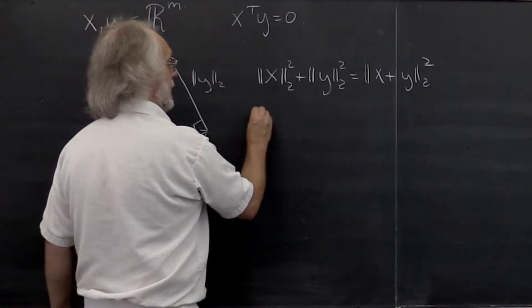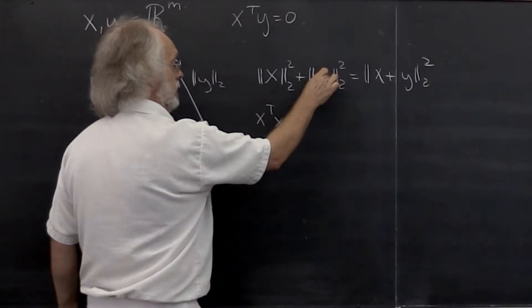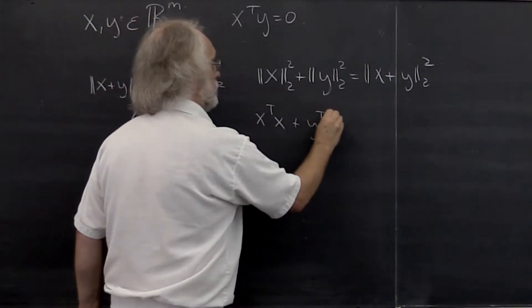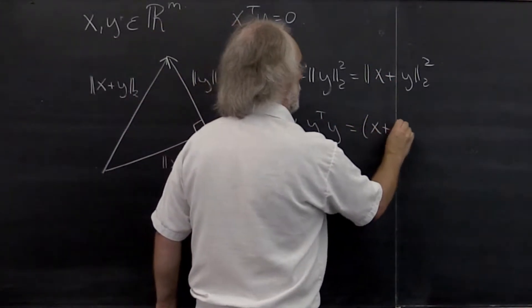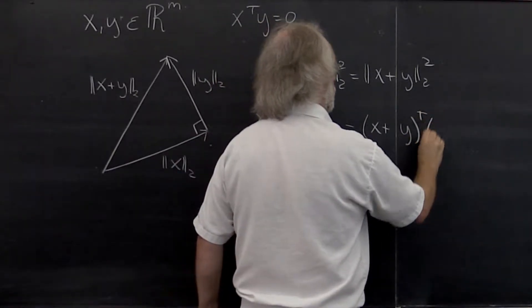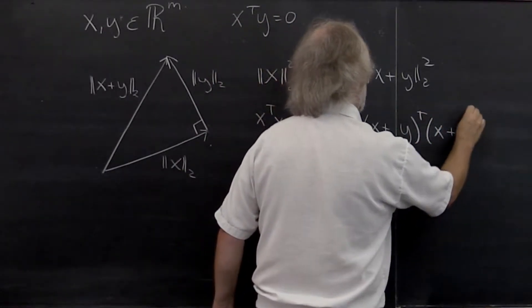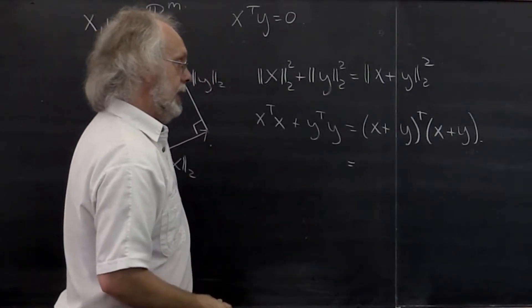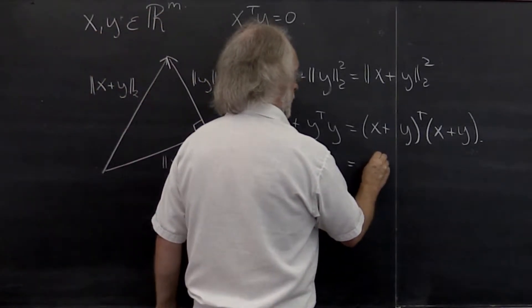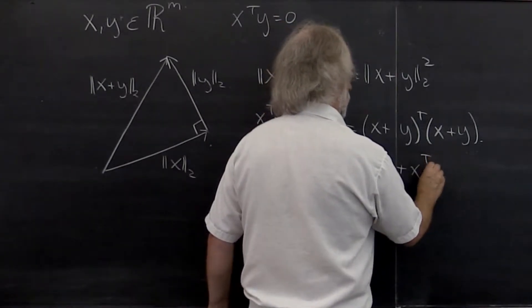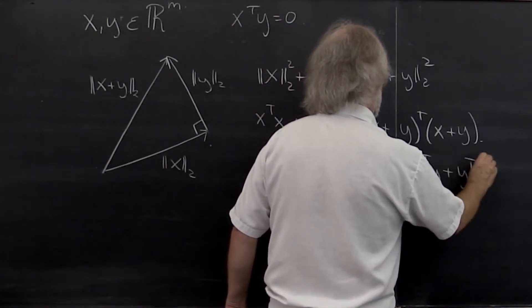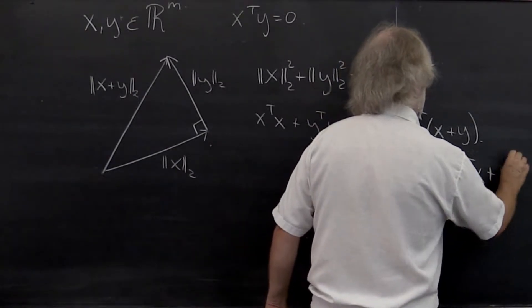Well this we can write as x transpose x. This we can write as y transpose y. And this we can write as x plus y transpose x plus y. Which, if we multiply it out, gives us x transpose x plus x transpose y plus y transpose x plus y transpose y.